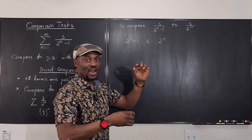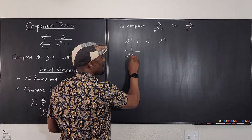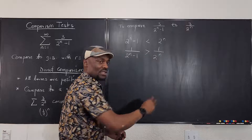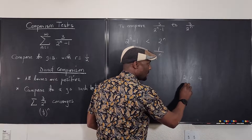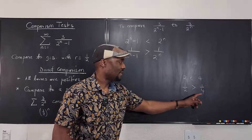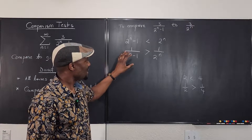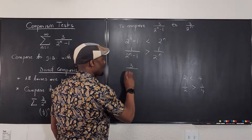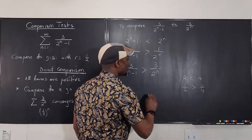But we want the reciprocal. When you flip the inequality — just like 2 < 4 becomes 1/2 > 1/4 — the sign changes. So 1 over (2^n minus 1) is greater than 1 over 2^n. Now multiply both sides by 3: 3 over (2^n minus 1) is greater than 3 over 2^n.